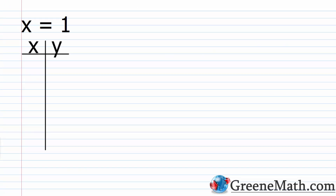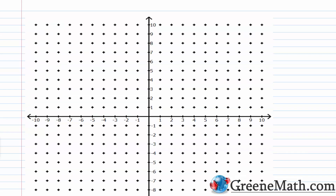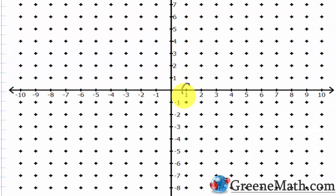What about x equals 1? This is a vertical line. No matter what the value is for y, x is always 1. If y is 5, x is 1. If y is 0, x is 1. If y is negative 5, x is 1. To graph this quickly, just find 1 on the x-axis and draw a vertical line, because no matter what value y takes, x is always 1.